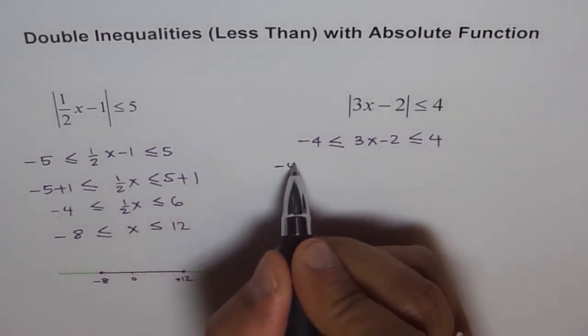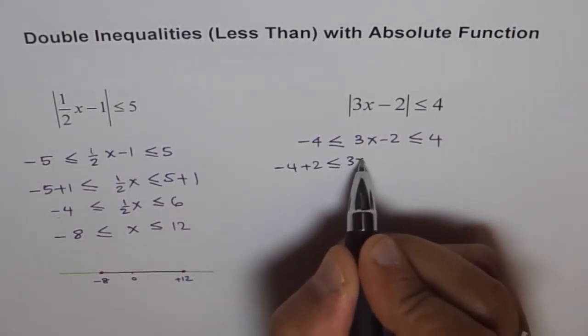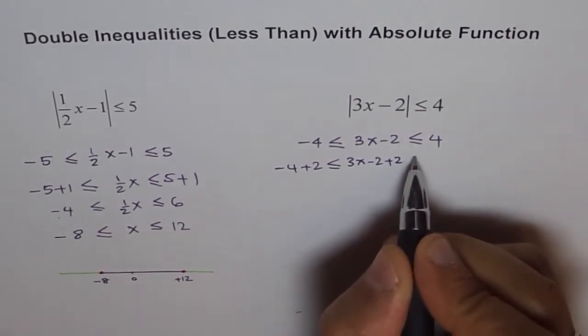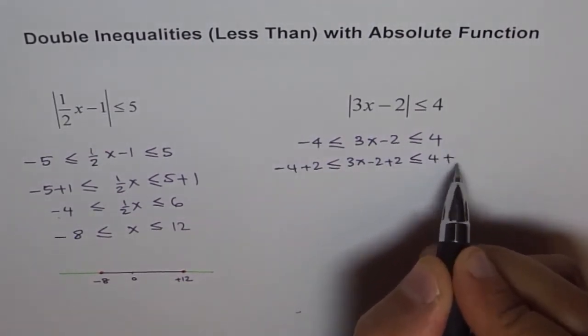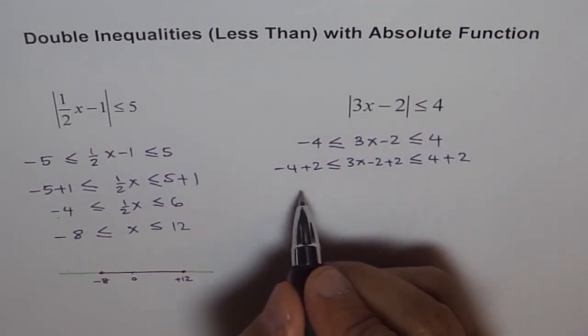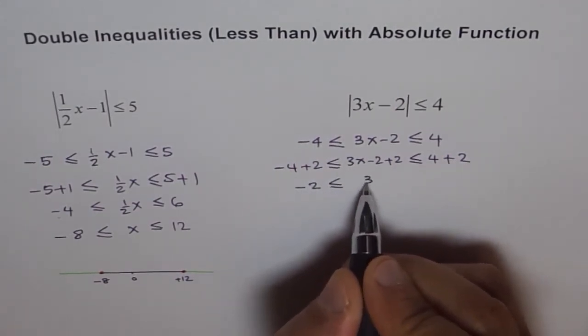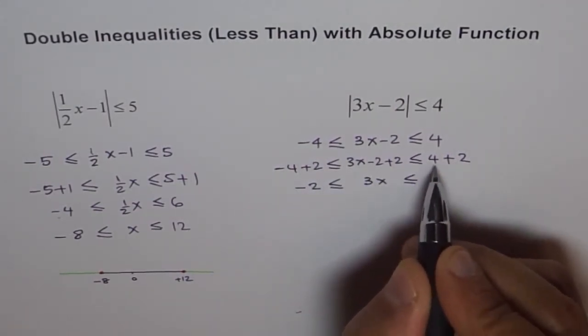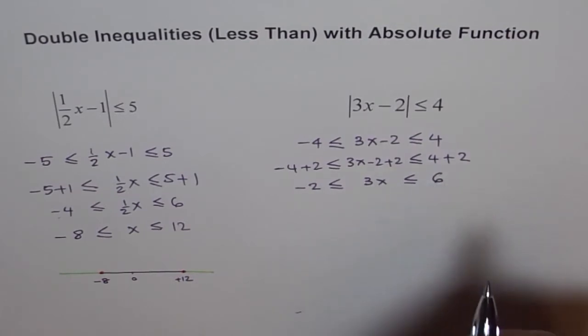Now, we will add 2 at every place. So, this time, let's say minus 4 plus 2 less than or equal to 3x minus 2 plus 2 less than or equal to 4 plus 2. Now, if we solve it, we get minus 2 is less than or equal to 3x is less than or equal to 4 plus 2, 6.